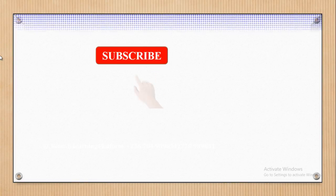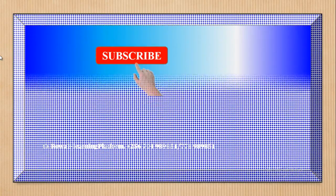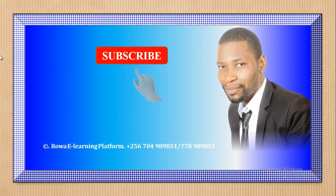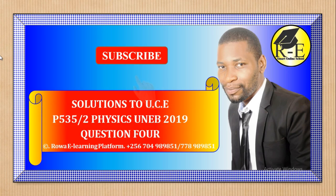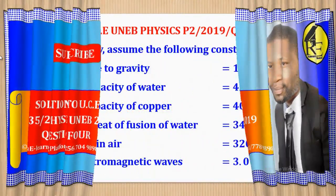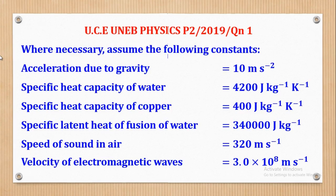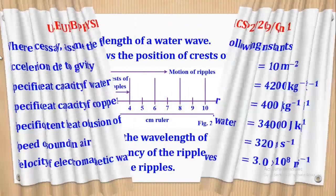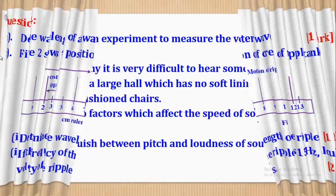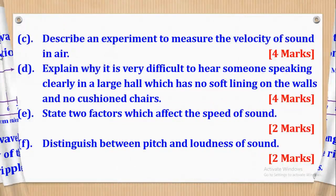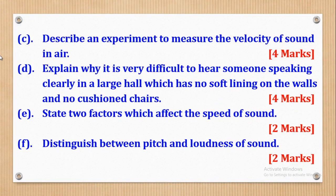Hello viewers, this is Wagner Ronald taking you through today's tutorial on A-level physics. In this video I'm going to share with you the solutions to A-level physics for UNEP 2019, particularly question 4 of paper 2. Where necessary you can use those constants. Today I believe you have already worked them out and are ready to check your progress, so let's get started.